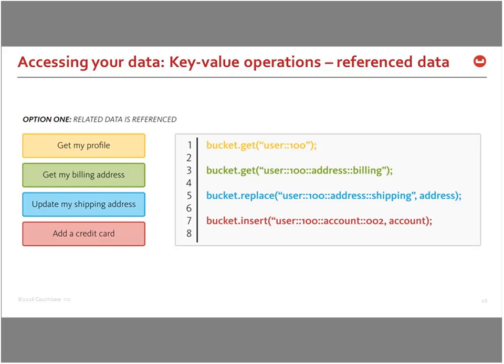The key-value API is very simple: pass a key, get the value; or here's the key and value, write it. This is extremely fast — what NoSQL is optimized to do. It operates one document at a time and can only use the primary key for reads and writes, but for that use case it delivers outstanding performance.